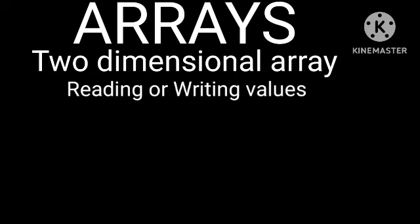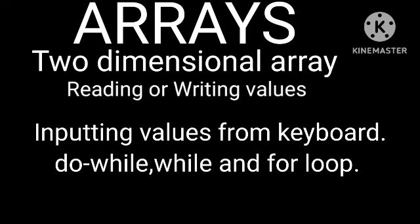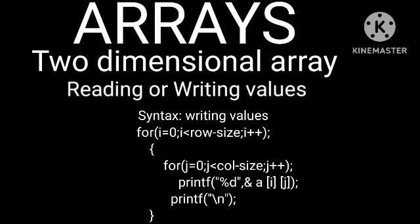Reading and writing values in 2D arrays: elements can be stored by inputting values from the keyboard using while, do-while, or for loops. Syntax for reading: for(i=0; i<row_size; i++) for(j=0; j<col_size; j++) scanf("%d", &a[i][j]). Syntax for writing: for(i=0; i<row_size; i++) for(j=0; j<col_size; j++) { printf("%d", a[i][j]); printf("\n"); }